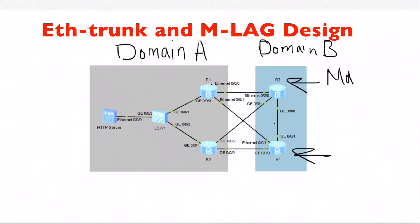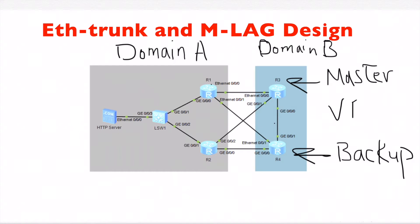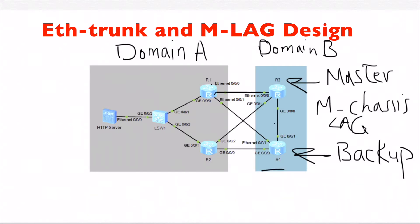R3 is configured as the master gateway for R1 and R2 VLANs, and R4 is configured as the backup. This means the connection from R1 to R3 is the master connection and is in the up state. The backup connection from R1 to R4 is the backup interface — it is in standby and in the down state; it is not working.